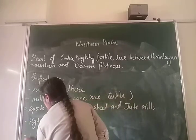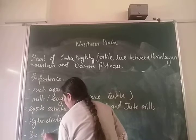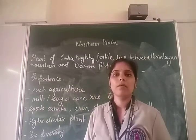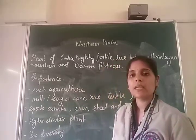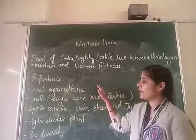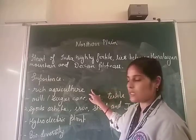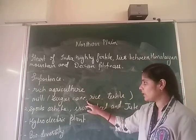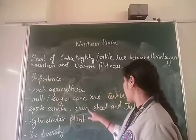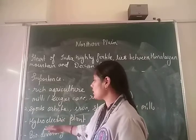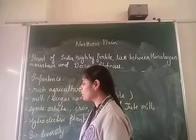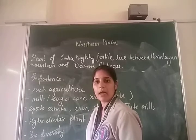Lastly, we are discussing biodiversity. There is good biodiversity in the Northern Plain — a variety of flora and fauna is present here, which makes it famous for wildlife. To summarize the importance: first, rich agriculture; second, many kinds of mills such as sugar, rice, and textile mills; iron, steel, and jute mills; sports article industries; hydroelectric power plants that generate electricity with the help of dams; and good biodiversity. I hope you have understood the chapter. Thank you.